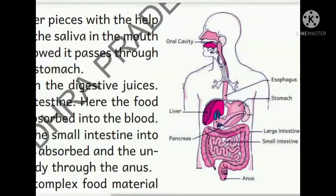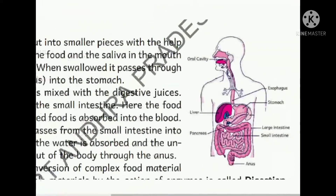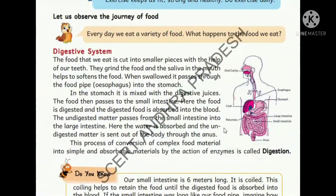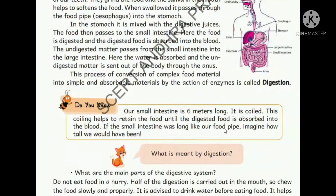Now let us see about the digestive system. We eat various types of food items. After entering the mouth - the oral cavity - where teeth and tongue are, food passes through a tube-like structure called the esophagus, then into the stomach - a bag-like structure - then into the small intestine, and then the large intestine, which stores waste material, and finally exits through the anus.